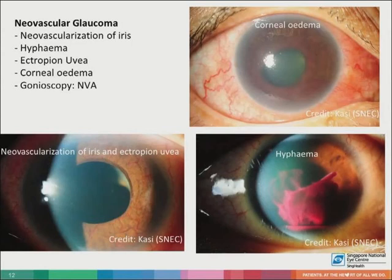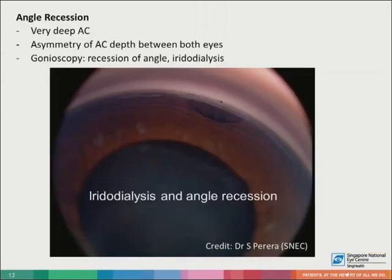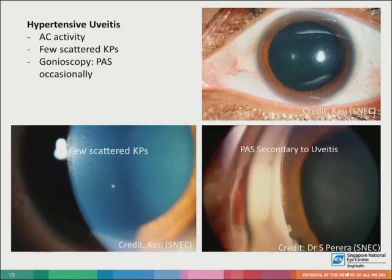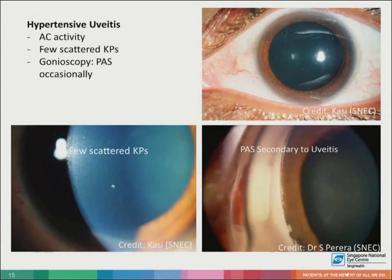Neovascular glaucoma will have iris and angle neovascularization, and often presents with a cloudy cornea and spontaneous hyphema. After trauma, look out for angle recession glaucoma; signs include a very deep anterior chamber, asymmetry of anterior chamber depth between both eyes, and angle recession with possible iridodialysis on gonioscopy. Patients with phacolytic glaucoma present with an intumescent cataract and cortical material within the anterior chamber. Hypertensive uveitis — otherwise known as Posner-Schlossman syndrome — patients have mild anterior chamber activity and scattered stellate keratic precipitates, and may have peripheral anterior synechiae visible on gonioscopy.